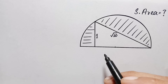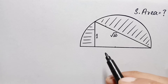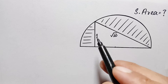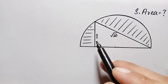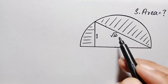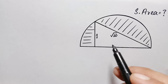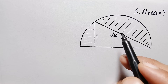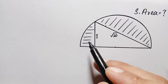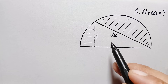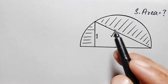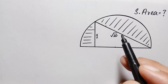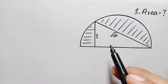Hello everyone, welcome. Today we have a new beautiful geometric math problem. We have a semicircle with a right angle triangle inside, where the height of the triangle is 1 unit and its hypotenuse is square root of 10. Our target is to find the shaded area of the semicircle. To do this, we will first find the area of the triangle, then the area of the semicircle, and subtract.